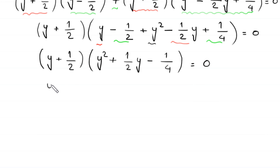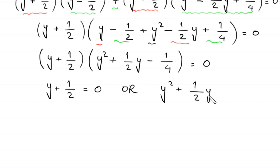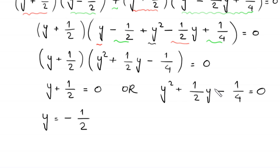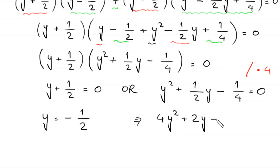So we have (y plus 1 over 2) times (y squared plus 1 over 2 times y minus 1 over 4) equals 0. Either y plus 1 over 2 equals 0, giving y equals negative 1 over 2, or y squared plus 1 over 2 times y minus 1 over 4 equals 0. This quadratic equation is not factorable, so we solve it using the quadratic formula.